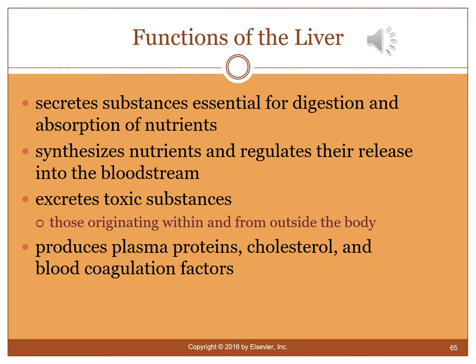Functions of the liver include secreting substances essential to digestion, synthesizing nutrients and regulating their release into the bloodstream, excreting toxic substances, and producing plasma proteins such as albumin, cholesterol, and blood coagulation factors. Animals with liver disease may develop coagulopathy because coagulation factors are produced by the liver.